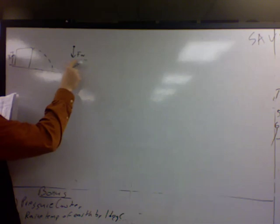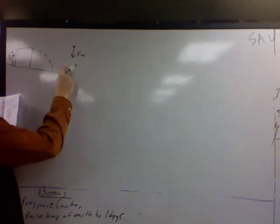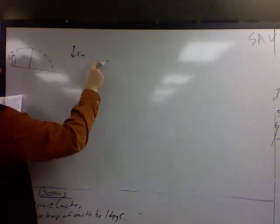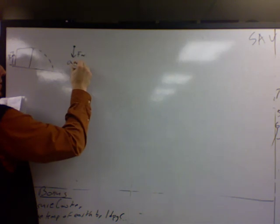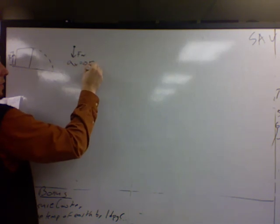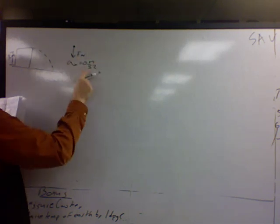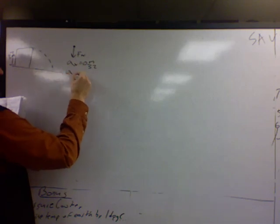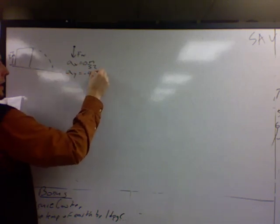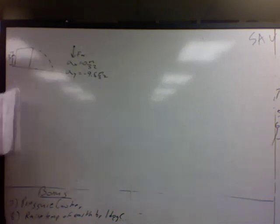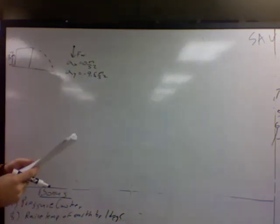And for all projectile problems, just about all projectile problems, once we neglect air resistance, that's the free body diagram, which tells us a couple things. There's no forces in the x, acceleration in the x is zero, and acceleration in the y is negative 9.8. We sum the forces and solve for a, that's what we'd get.